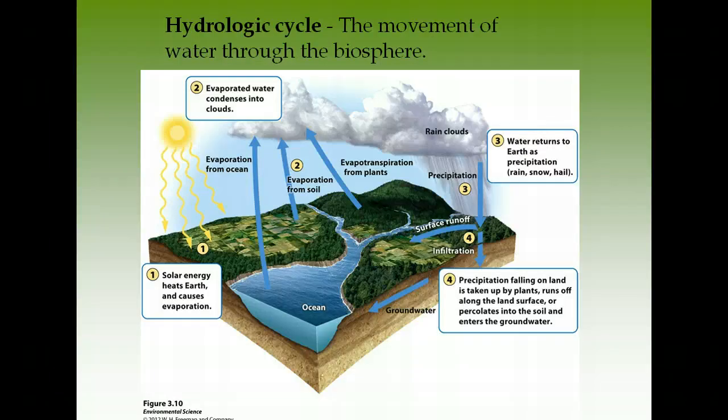The two most important biogeochemical cycles to learn are the water cycle and the nitrogen cycle — especially the nitrogen cycle — with the carbon cycle third. The other cycles are rarely tested on the AP exam, but the nitrogen and water cycles are always on it. Let's start with the water cycle, also called the hydrologic cycle — simply the movement of water through the biosphere.